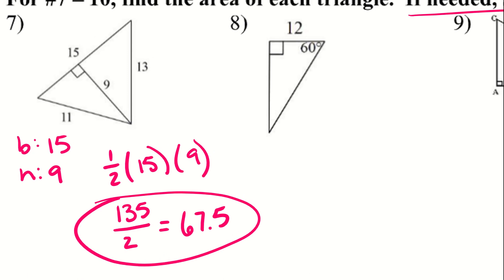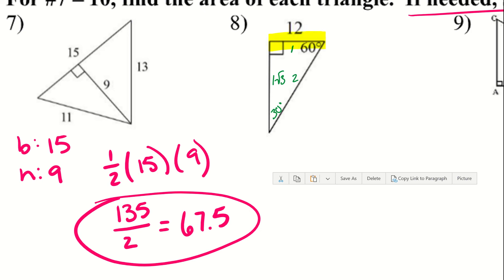For number 8, we only have one side and we have to know the base and the height. We have a 60-degree angle, so this is a special right triangle — a 30-60-90. The ratios are 1, root 3, and 2. We only need the base and the height, so we don't need to figure out the hypotenuse.